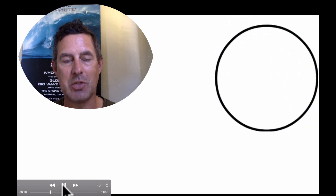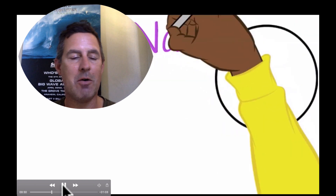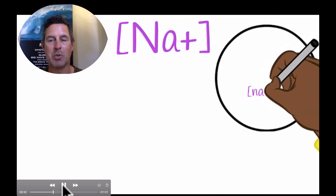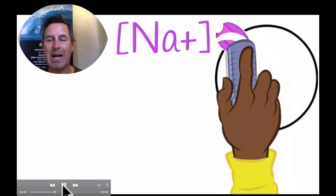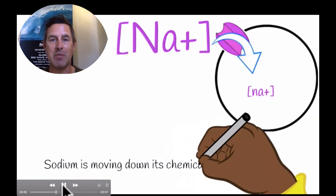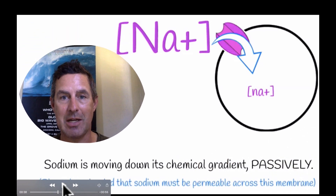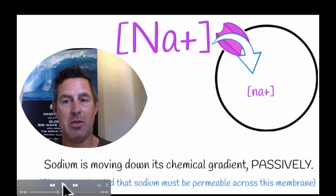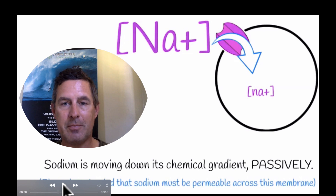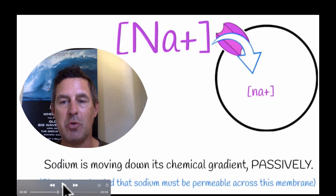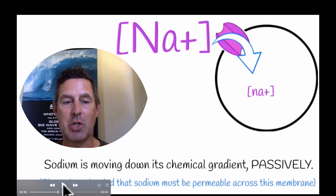So let's take a look at this body cell right here. All body cells, at least in normal situations, have a high concentration of sodium outside of the cell and a low concentration of sodium inside of the cell. The way this is set up — which is generally how the body is set up — is that sodium always wants to move into cells, down its chemical gradient, otherwise known as its concentration gradient.